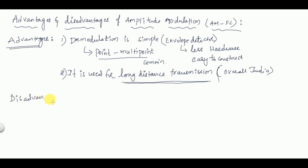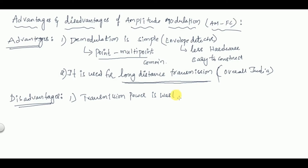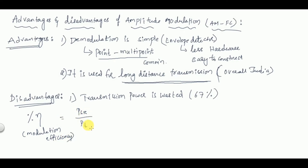Next come the disadvantages of AM. The first disadvantage is that transmission power is wasted — around 67 percent of the transmitted power is wasted in the case of AM. To understand why, we look at modulation efficiency.